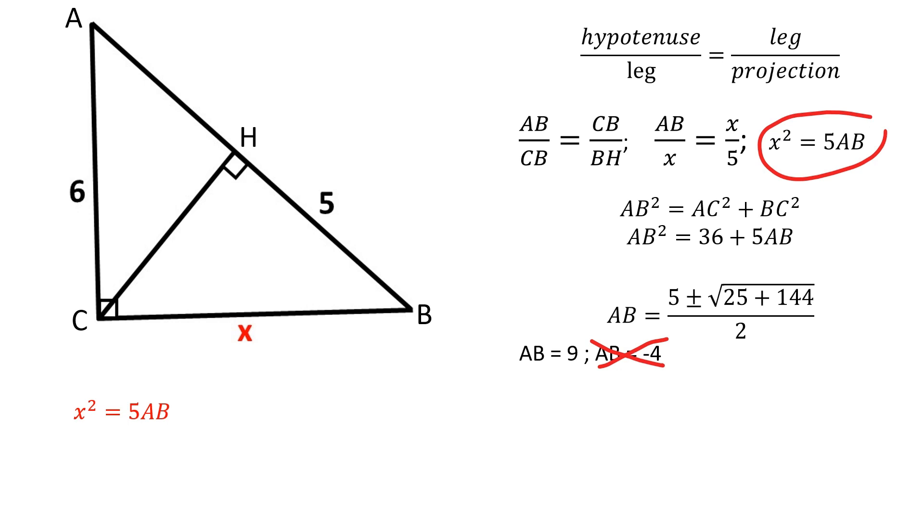And since x squared is equal to 5AB, x squared is equal to 45. Therefore x is equal to 3 square roots of 5.